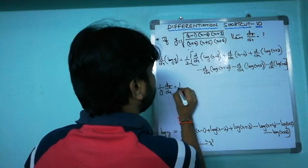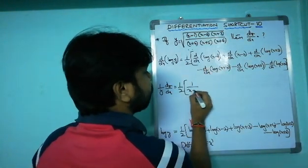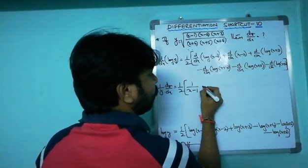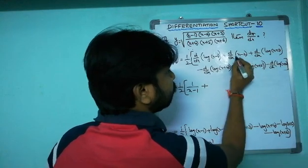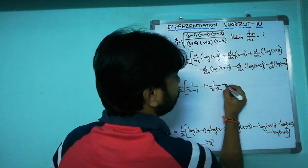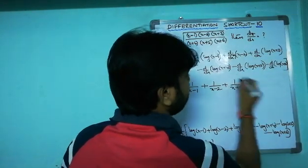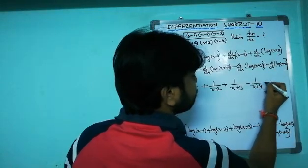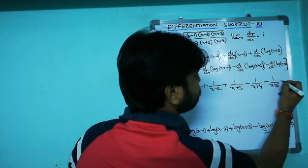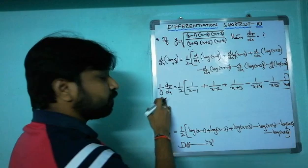Using d/dx[log(x+a)] = 1/(x+a) by the chain rule (inner derivative is 1), we get: (1/y)·(dy/dx) = (1/2) · [1/(x−1) + 1/(x−2) + 1/(x+3) − 1/(x+4) − 1/(x+5) − 1/(x+6)].